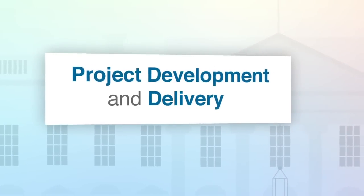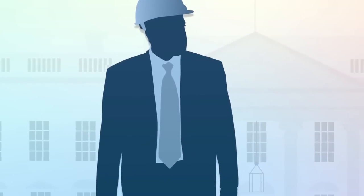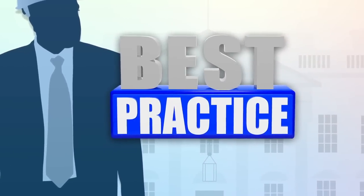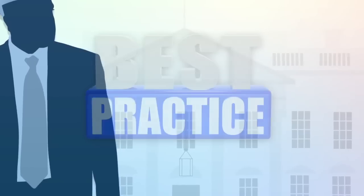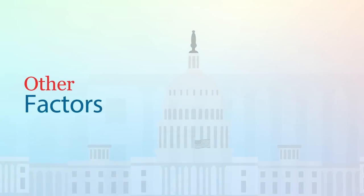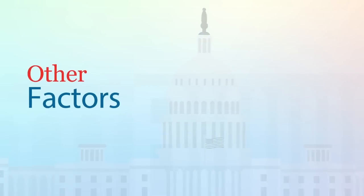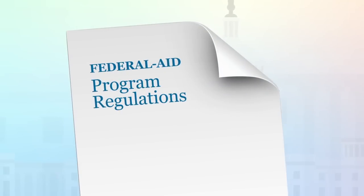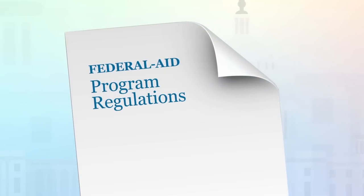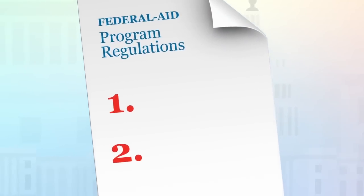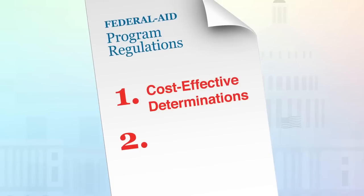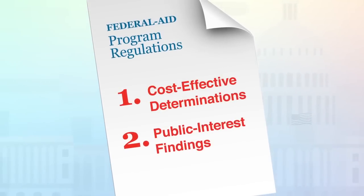Federal-aid project development and delivery normally rely on the use of engineering judgment and best practices to make project decisions that are guided by the general concept of free and open competition. Congress has recognized that there are times when decisions have to be made using factors other than the norm. The Federal-aid program regulations allow project-level design and construction operational decisions through two other means to justify deviating from standard practices. They are cost-effectiveness determinations and public interest findings.